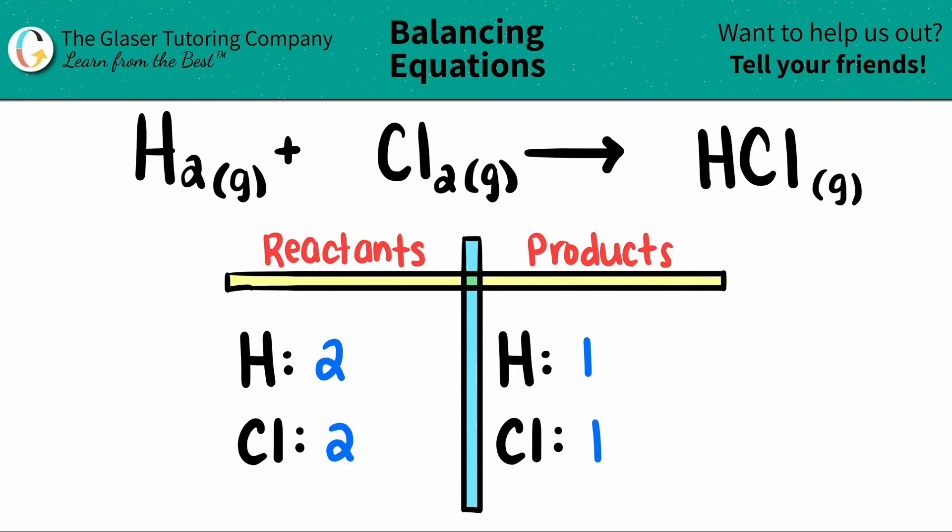Now, we just always balance by bringing the lower number to the higher number by multiplication. Does it really matter which one to start with? No. You just start with the one that's easiest. Let's start with the hydrogen. 1 times what will get me to 2? 1 times 2. And that number that you stated is the coefficient of the element that you're trying to solve for. So I'm going to put a 2 here.